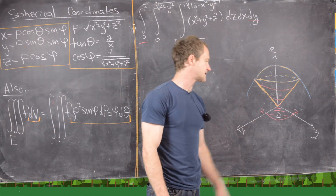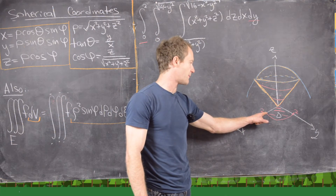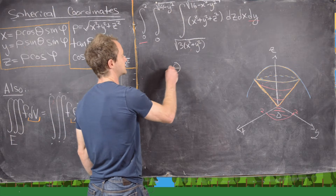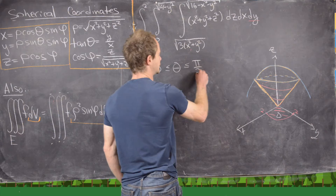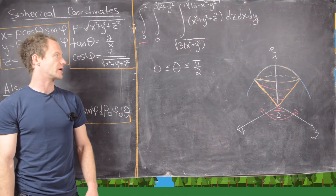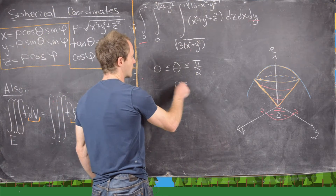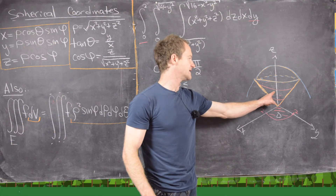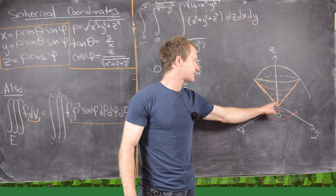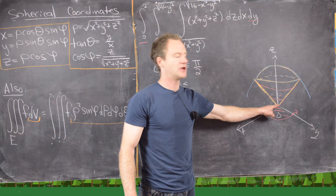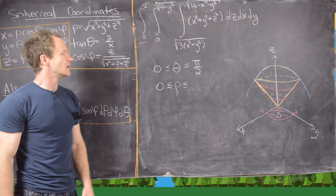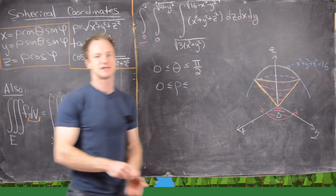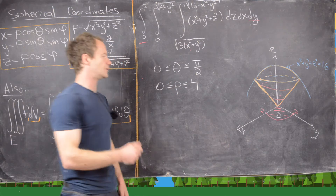We can most easily identify angle theta first. Theta goes from the positive x-axis to the positive y-axis, so theta goes from 0 to pi over 2. For rho, we want to be inside the ice cream cone, so rho goes from 0 out to the outer sphere. Since that sphere has equation x squared plus y squared plus z squared equals 16, it has radius 4, so rho goes from 0 to 4.